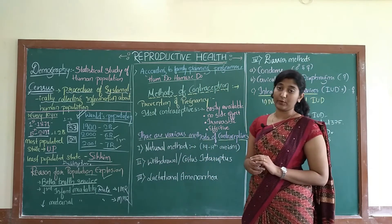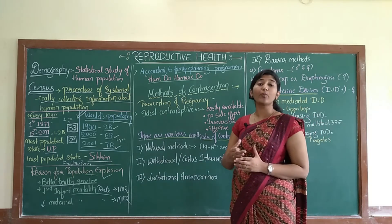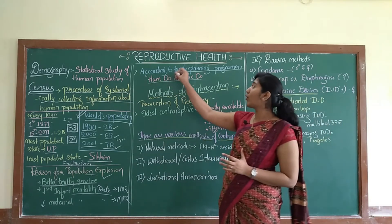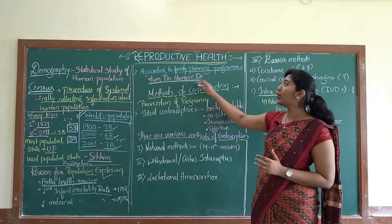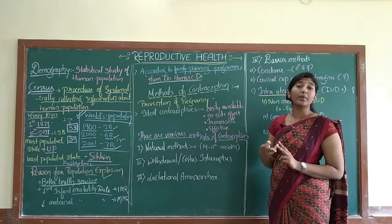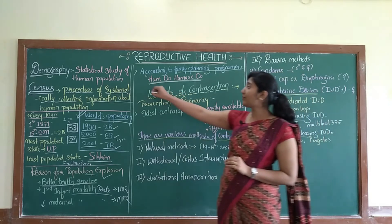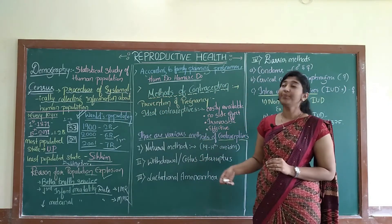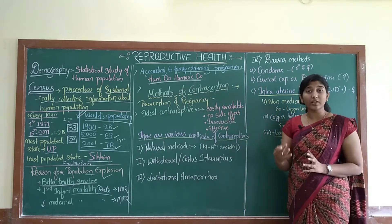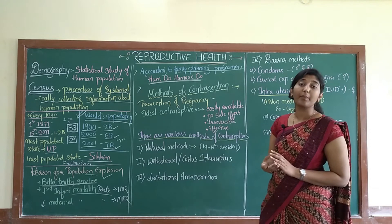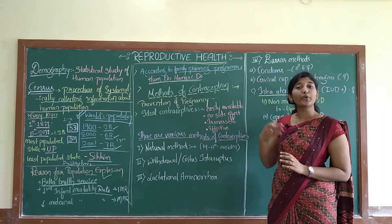The government has also motivated couples through family planning programs. There was a slogan that two children are sufficient for one couple, and more recently the message is that one child is sufficient. The government provides special facilities to couples who have a single child. The Indian government is putting more effort into controlling the population.